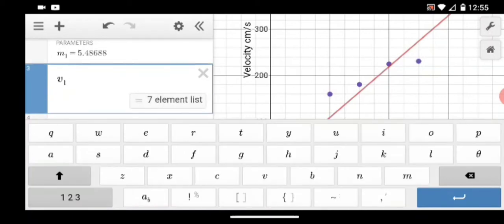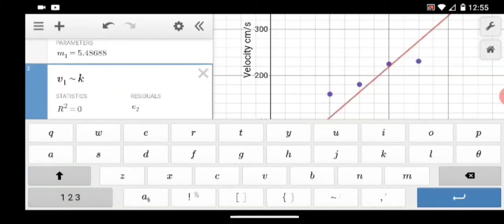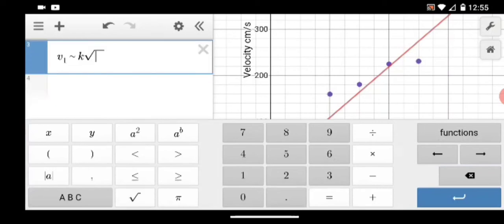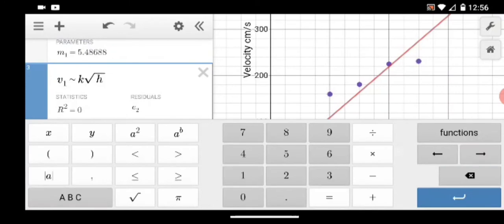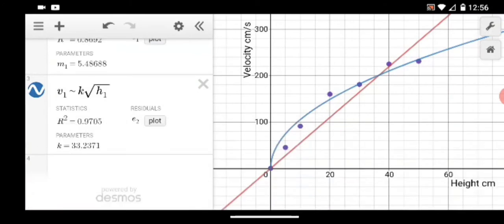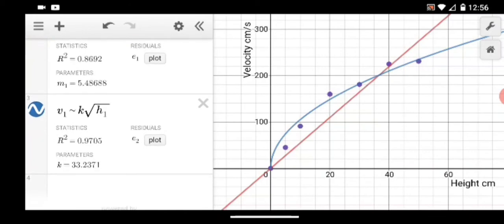The theory will lead us to a slightly different possible model, one that looks like this equation here. v1 is approximately equal to a constant. I'll use k for a constant. Times the square root of h1. The theory will suggest that this is a more appropriate model. And indeed, this line that you see here, the line that just appeared, the blue one, hugs closer to the data points and looks like it could be a more reasonable result.